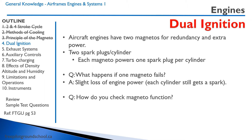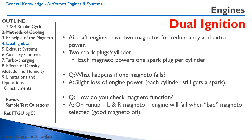Think about how you would check the magneto function. On the run-up, the ignition switch is usually a key that allows you to select the left magneto, right magneto, or both magnetos. With power applied to the engine, you select left and then right magneto only. If one magneto is unserviceable, the engine will falter when that bad magneto is selected, because selecting it shuts off the good magneto.